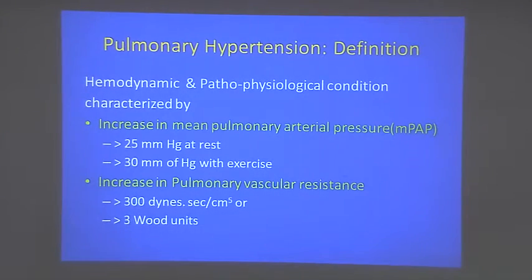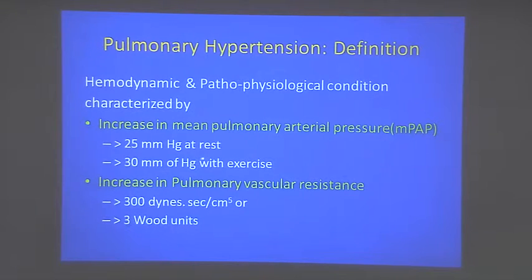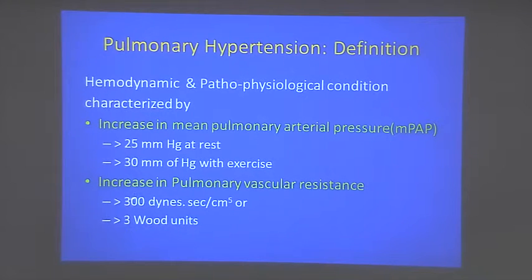Pulmonary hypertension is defined as a mean pulmonary artery pressure greater than 25 mmHg at rest or greater than 30 mmHg with exercise. Alternatively, it is defined by an increase in pulmonary vascular resistance of more than 300 dynes·sec/cm² (or 3 Wood units, named after the cardiologist Paul Wood). Some studies use thresholds of 240 or 300 dynes·sec/cm⁵ — there is some variation in the literature.